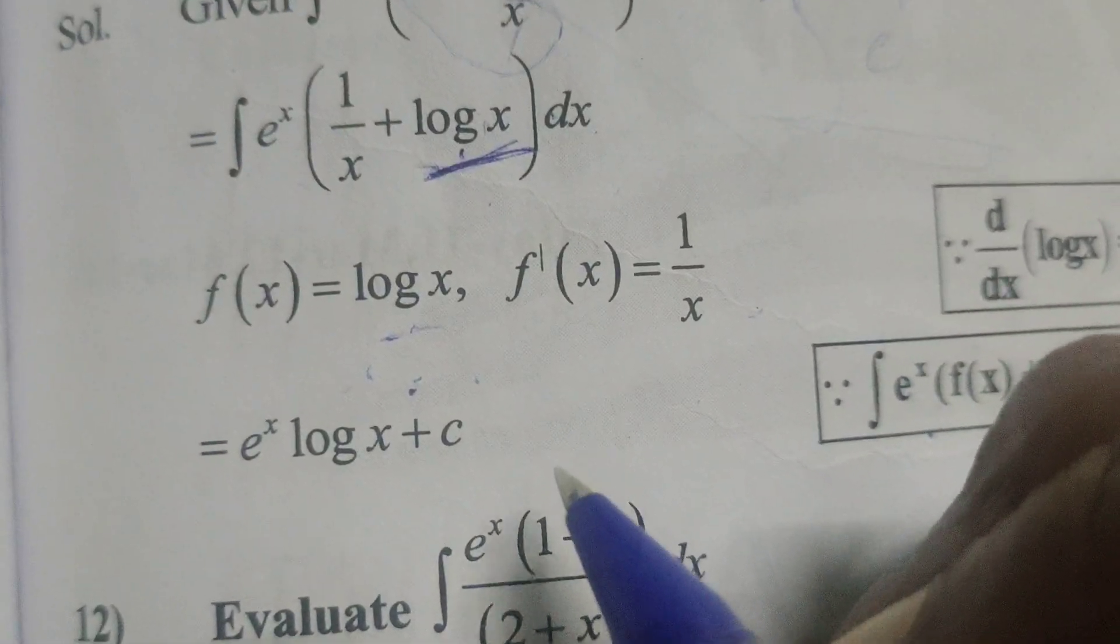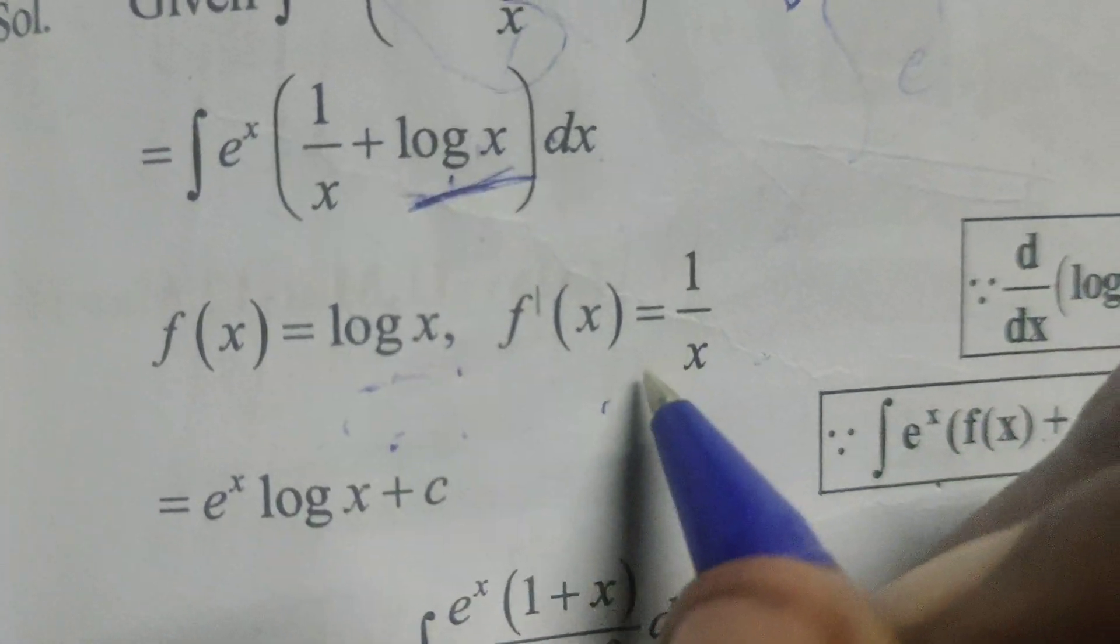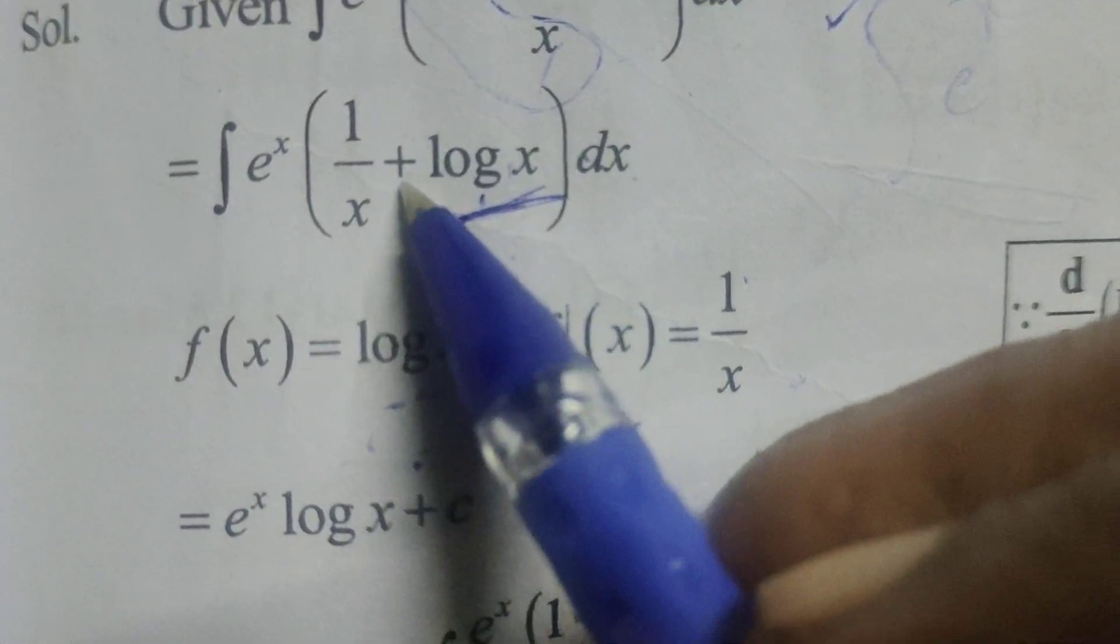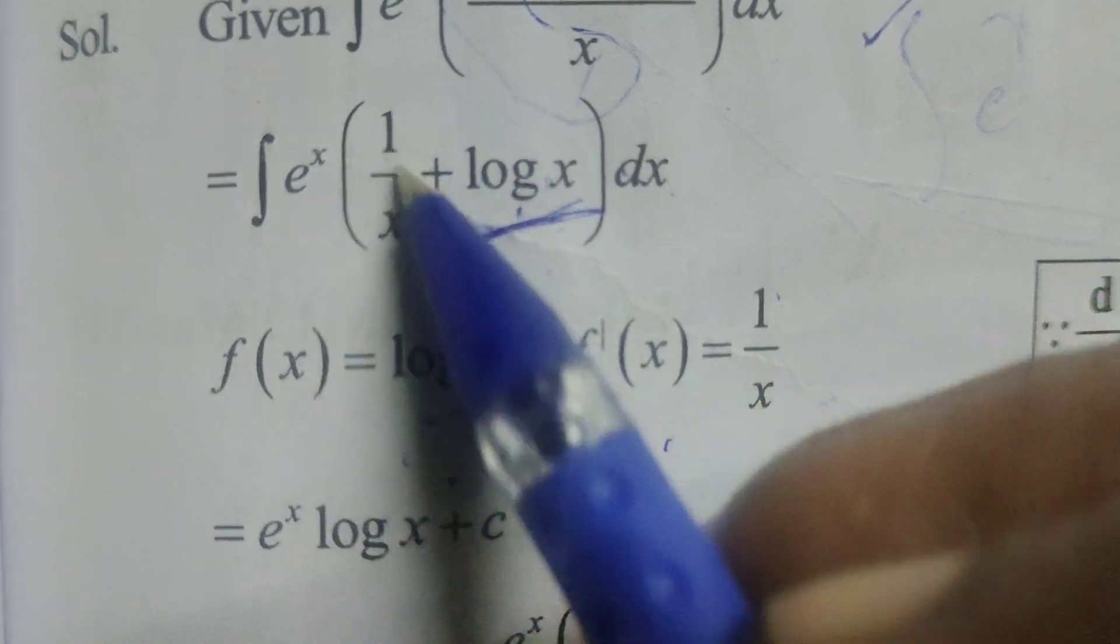Here f of x equals to log x, differentiating this gives 1 by x. So in this differentiation of log x, here 1 by x is there.